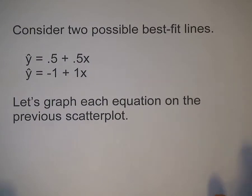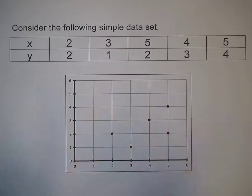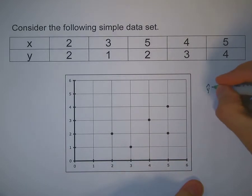Now we want to consider two possible best fit lines. I have equations for both of them here: y-hat equals 0.5 plus 0.5x and y-hat equals negative 1 plus 1x. Let's graph each equation on the scatter plot. I'll do the first one in green.